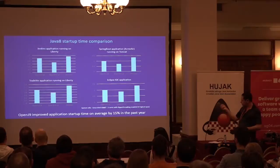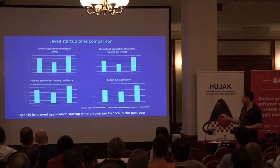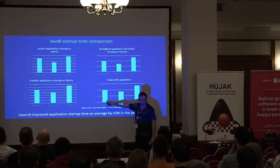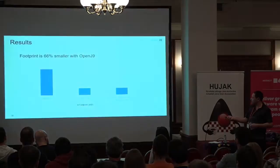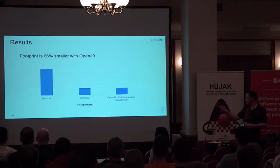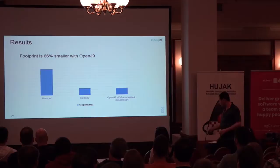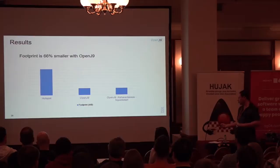Why would you want to use it? Looking at Java 8 startup time comparisons across different applications, Hotspot is on the right of each diagram and you can see the startup time for OpenJ9 is generally less. Version 0.8 is from about a year ago and 0.12 is the current one — we've made quite a few improvements over the last year. The memory footprint is also significantly smaller with OpenJ9: about 66% improvement is what most people see just by switching the JVM.